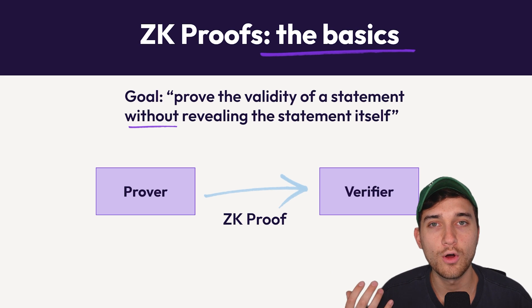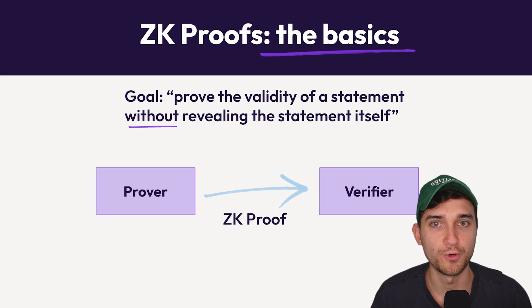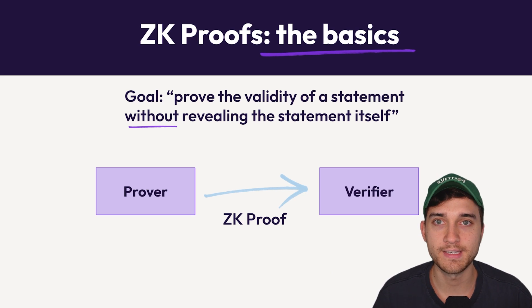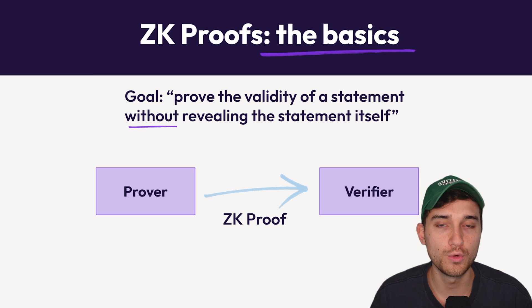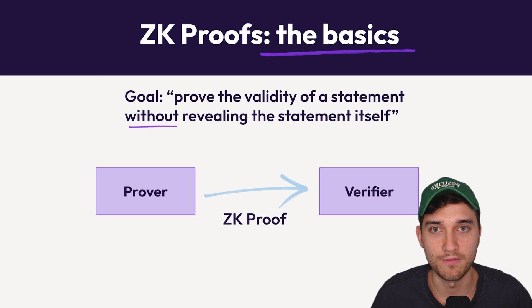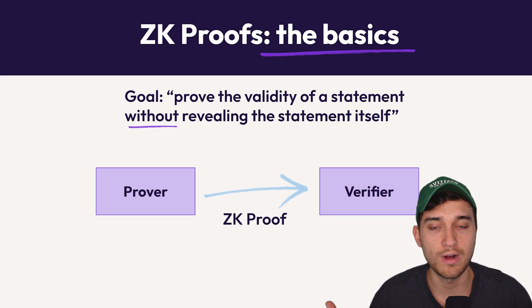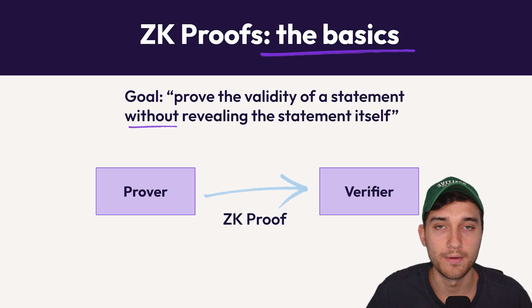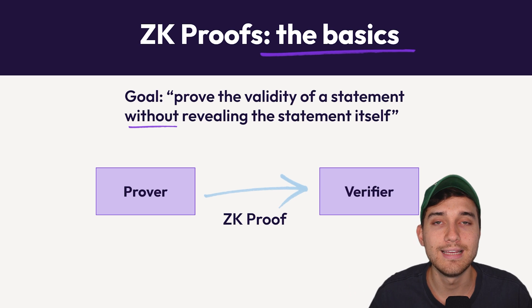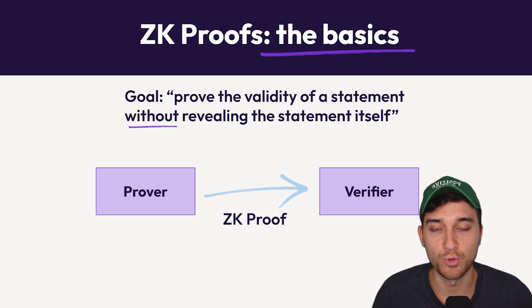At the core of this, the overall goal of zero-knowledge proofs is to prove the validity of a statement without revealing the statement itself. This process involves two key parties: the first is the prover, and the second is the verifier. The prover is the party trying to prove the validity of a statement — they pass this in the format of a zero-knowledge proof to the verifier, who then determines whether the statement the prover is making is actually true.